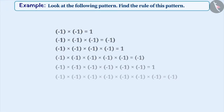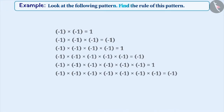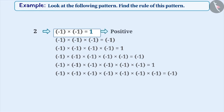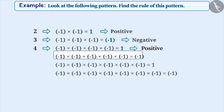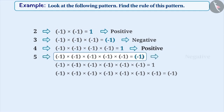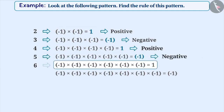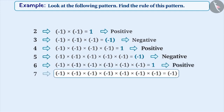Look at the following pattern and find the rule of this pattern. As you can see, the product of 2 negative integers is positive. The product of 3 negative integers is negative. The product of 4 negative integers is positive. The product of 5 negative integers is negative. The product of 6 negative integers is positive. Similarly, the product of 7 negative integers is negative.